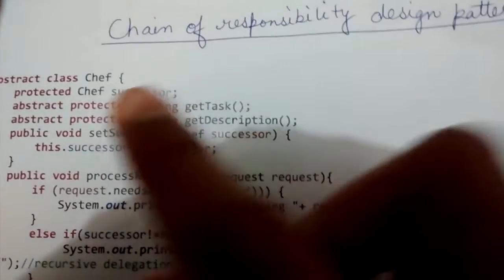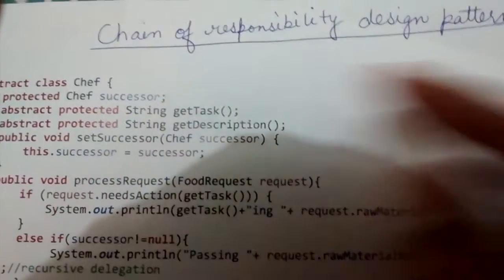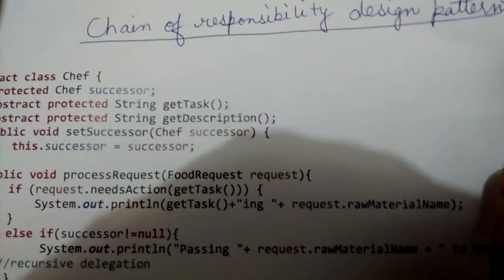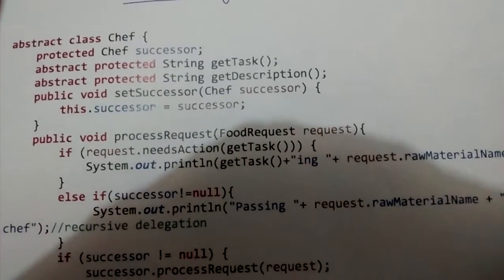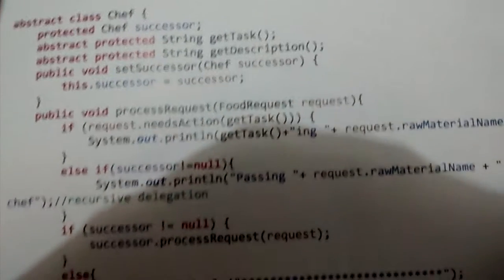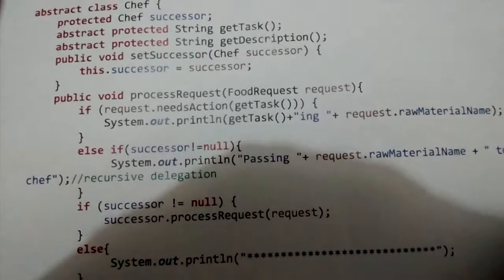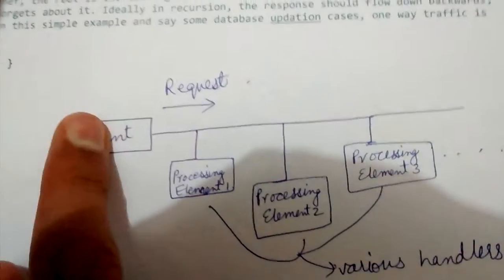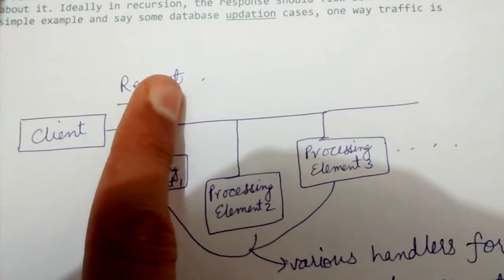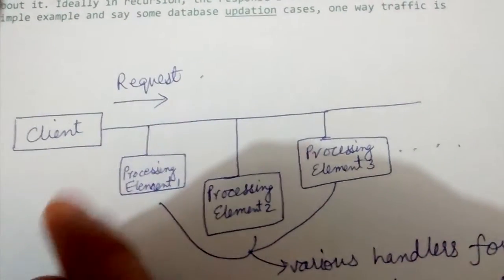Today we'll be looking at the Chain of Responsibility design pattern. This is a very interesting design pattern. Let's look at the diagram of it first — there is the client, and it is sending a request.